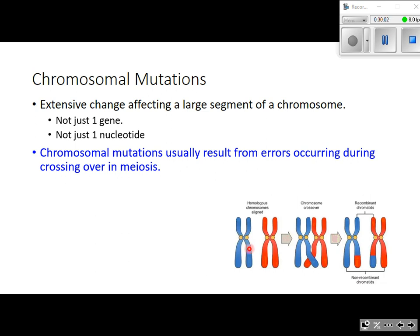During crossing over, homologous chromosomes pair up and non-sister chromatids swap DNA with one another. What's supposed to happen is one chromatid breaks at one point, the other chromatid breaks at the same point, and they switch — a nice even swapping of genetic material. However, things can go wrong. When these pieces of DNA break off and attempt to reattach, sometimes they reattach in the wrong spot or attach to the wrong chromosome, and all kinds of errors can occur.